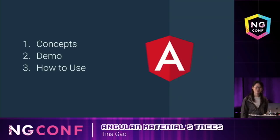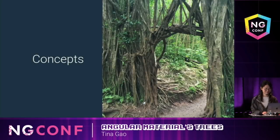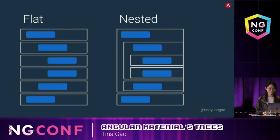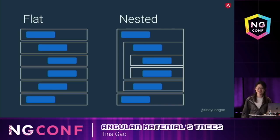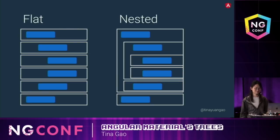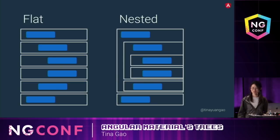So now let me go through the concepts of the tree and then show some demos and show you how to use the tree. There are two types of trees in Angular Material. One is flat tree and the other one is nested tree. In flat tree, the logical parent-child relationship is flattened and they become siblings in the DOM. While in nested tree, we preserve the parent-child relationship.